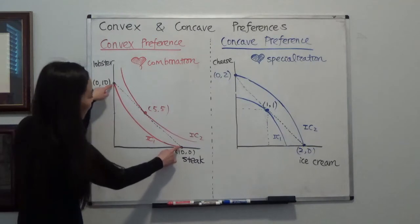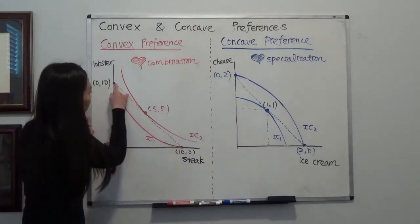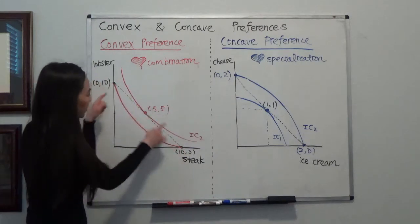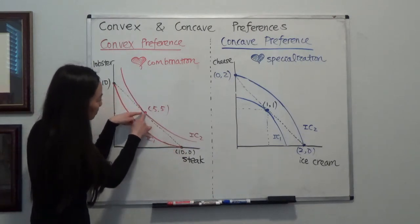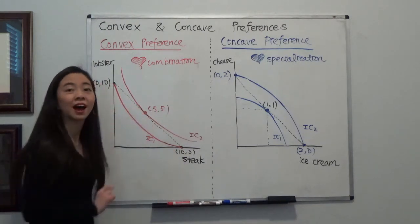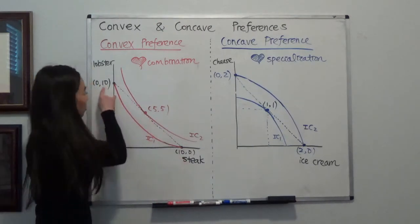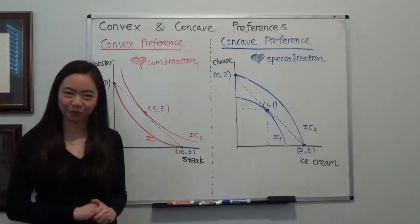And in fact, in that case, any linear combination between the two points, like pure steak or pure lobster, any linear combination between the two will set you to a higher utility level than either only steak or only lobster. So that's our convex preference.